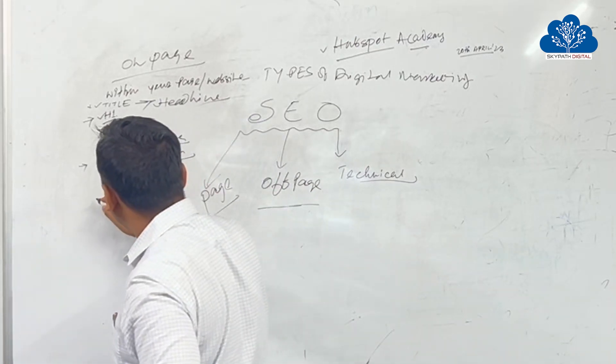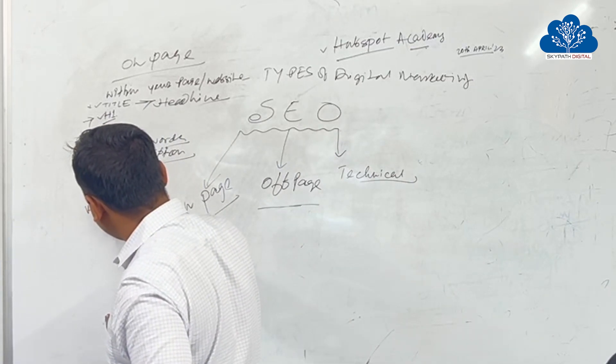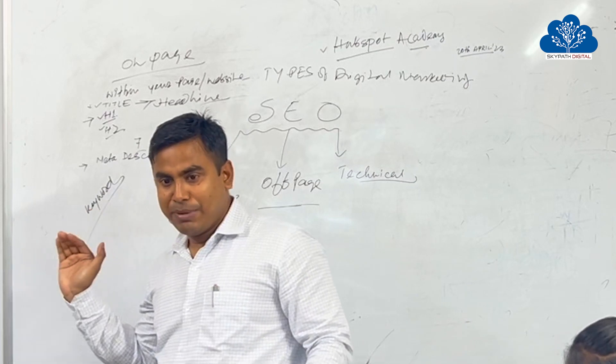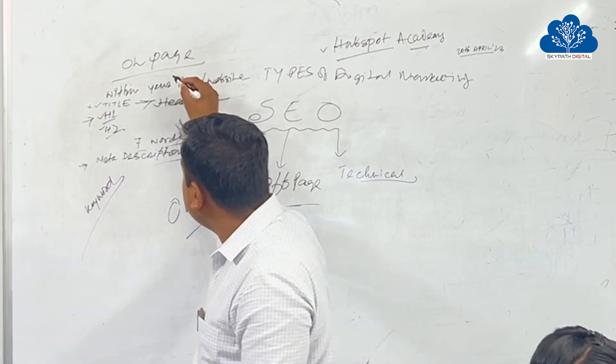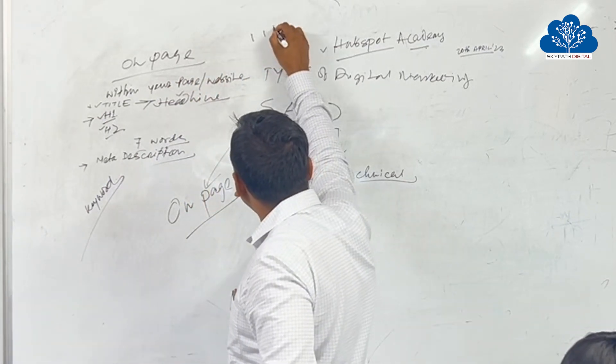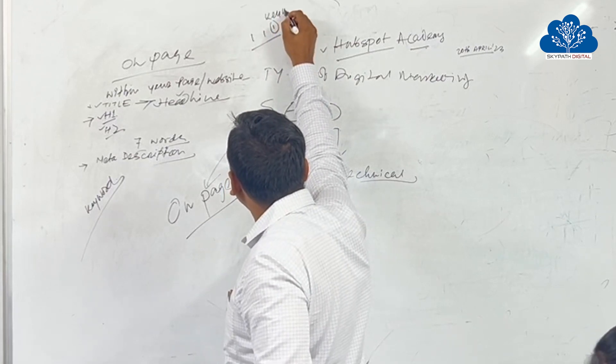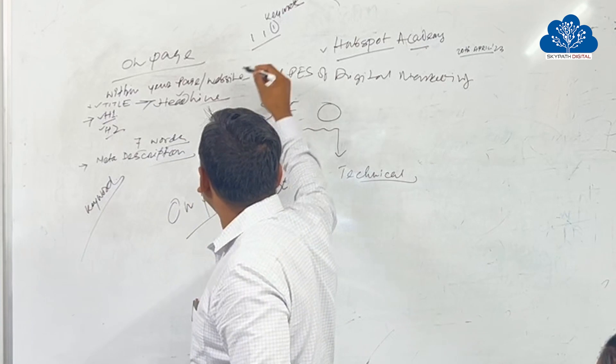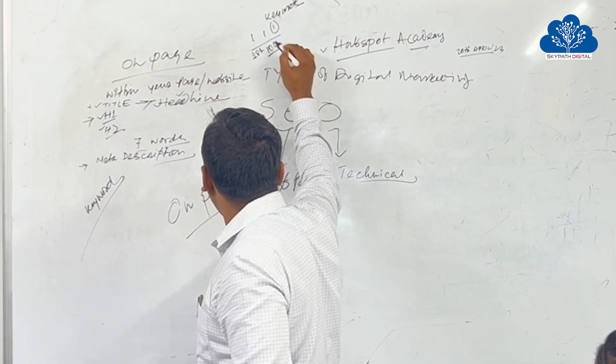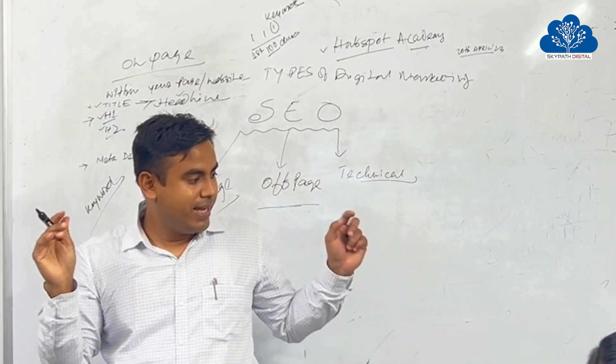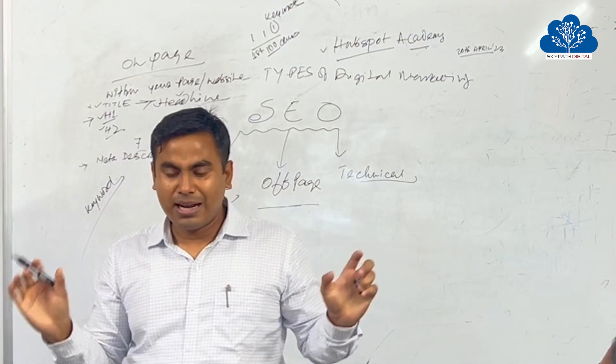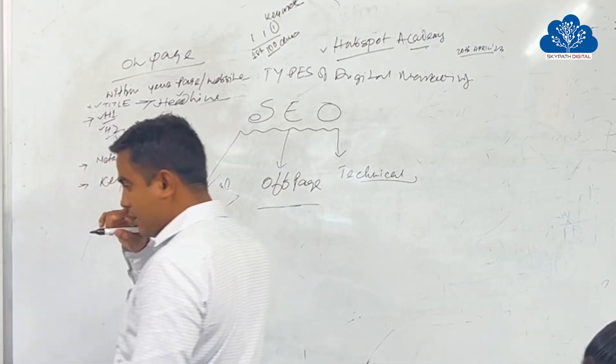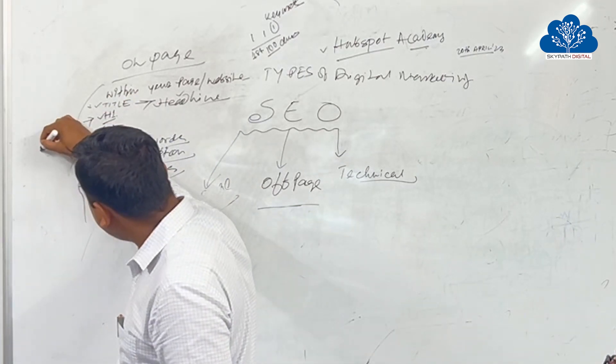So in title also you should write your keywords. There's content marketing, content part. So keywords also you have to use in your title. Within the three words you have to write the keyword so that the discoverability of your particular content is higher. And in the meta description also, within the first 100 characters you should use that particular keyword so that the discoverability of your content is higher to showcase in Google. Keywords is also important. How you are using the keywords.